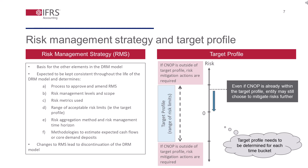The risk management strategy is expected to be kept consistent throughout the life of the DRM model. As tentatively agreed by the IASB in September 2018, when the entity changes its risk management strategy, the DRM model would be discontinued prospectively, and the accumulated DRM adjustment should be reclassified to profit or loss over the life of the target profile as defined prior to the change in risk management strategy.